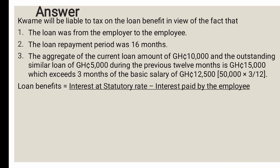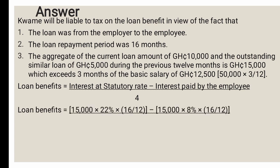Formula: Loan Benefit = (Interest at Statutory Rate − Interest Paid by Employee) ÷ 4. We use GHS 15,000 — the aggregate amount — not just GHS 10,000. Loan Benefit = [(GHS 15,000 × 22% × 16/12) − (GHS 15,000 × 8% × 16/12)] ÷ 4. This gives a loan benefit for 16 months of GHS 700.